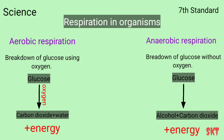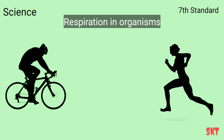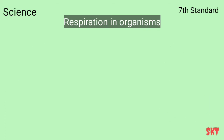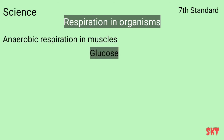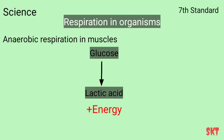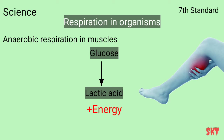Even human cells do anaerobic respiration sometimes, but only for a short period. Like when you do heavy physical activities such as running or cycling, the muscle cells in your legs first respire aerobically, but after some time when the oxygen supply becomes limited, anaerobic respiration takes over for a short period. Glucose in the muscles, in the absence of oxygen, converts into lactic acid plus energy. Lactic acid is the main reason you feel more tired during heavy physical activities, and its accumulation also causes muscle cramps — that pain you feel when you run very fast.